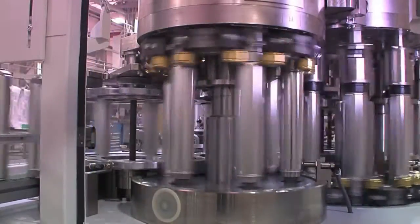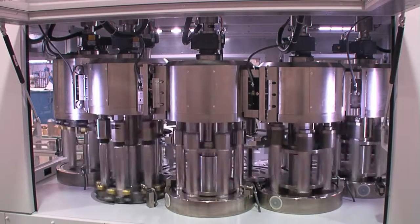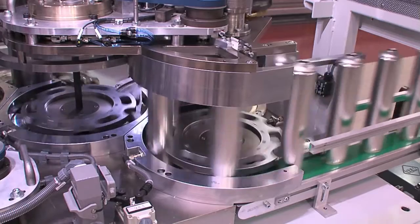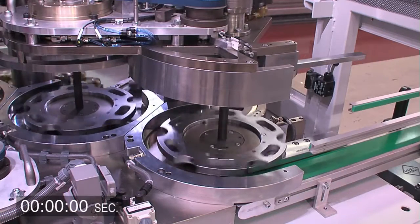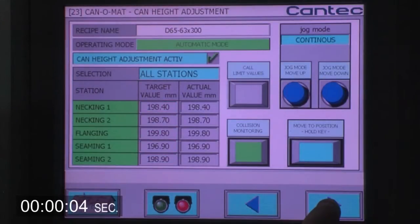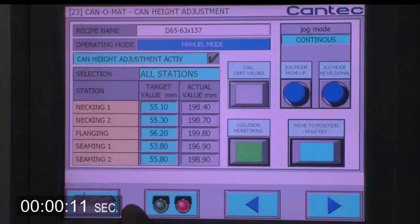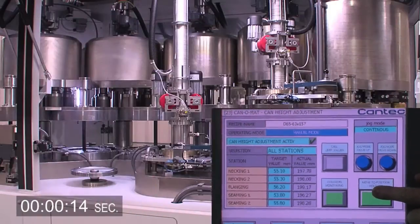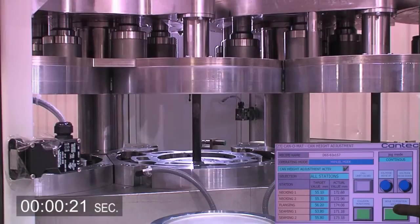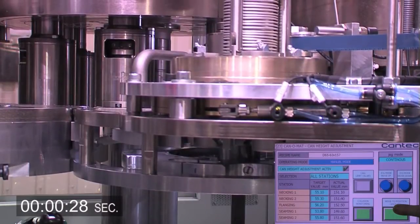The Kanamat aerosol includes an automatic can height adjustment for manufacturing different can heights without the need to change any parts. Here we see an example shown in real time of the can height being changed from 300mm to 157mm. Complete height changeover is controlled by the machine controller. The specification for the new can height has to be chosen. All stations are simultaneously moved to the new height at the touch of a single button.